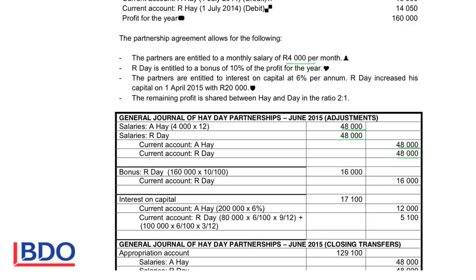Day is entitled to a bonus of 10% of the profit. The profit is $160,000, so the bonus account will be debited with $160,000 times 10%, which gives me $16,000, to increase expenses, and the current account will be credited to show that the business owes money to them.